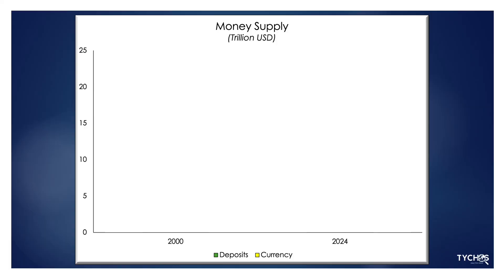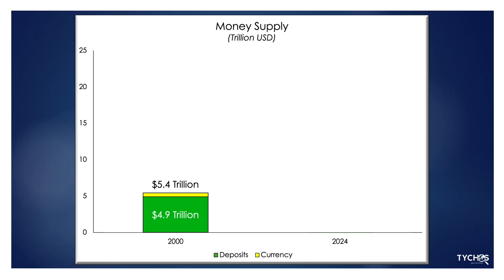In this Fed data, we see that in the year 2000, the total money supply was $5.4 trillion. Of that, the vast majority — $4.9 trillion, or 90% — was deposits: checking accounts and the like.